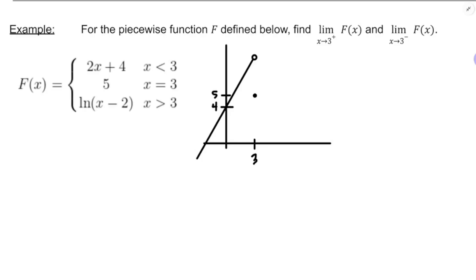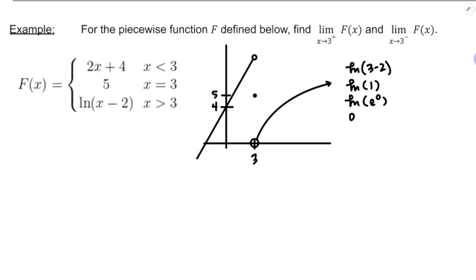Natural log of x minus 2 grows but levels off — the graph is concave down. I need to figure out where the graph starts at x equals 3. Natural log of 3 minus 2 is natural log of 1. What exponent do I put on e to get 1? Well, 1 is e to the 0, and natural log and exponential base e undo each other, giving 0. So we start at y equals 0 with an open circle, and then have a graph that kind of looks like that. Here we've got ourselves a sketch of the graph of f.